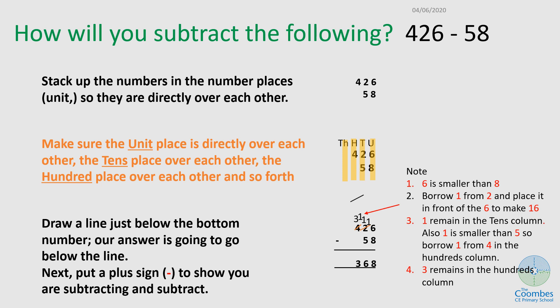How do I go about subtracting these numbers? 426 take away 58. The first step is to stack up the numbers, but remember I cannot write the 58 first, so 426 take away 58. When I do that, I make sure that the units align in their column, the tens align in their column, the hundreds align in their column. Now I draw a line beneath, put my minus sign just to remind me, and start my subtraction.